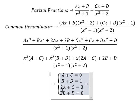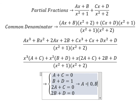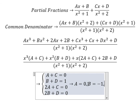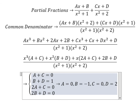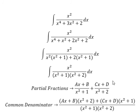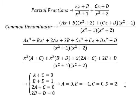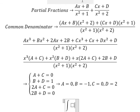Solving the system: A equals zero, B equals negative one, C equals zero, D equals two. Substituting back, the zero terms drop out, so we are left with B equals negative one and D equals two going into the partial fractions.